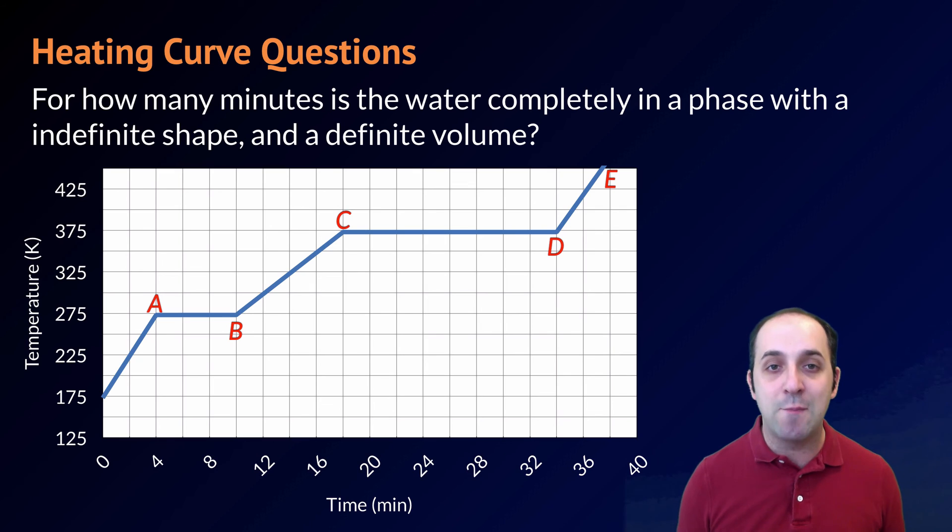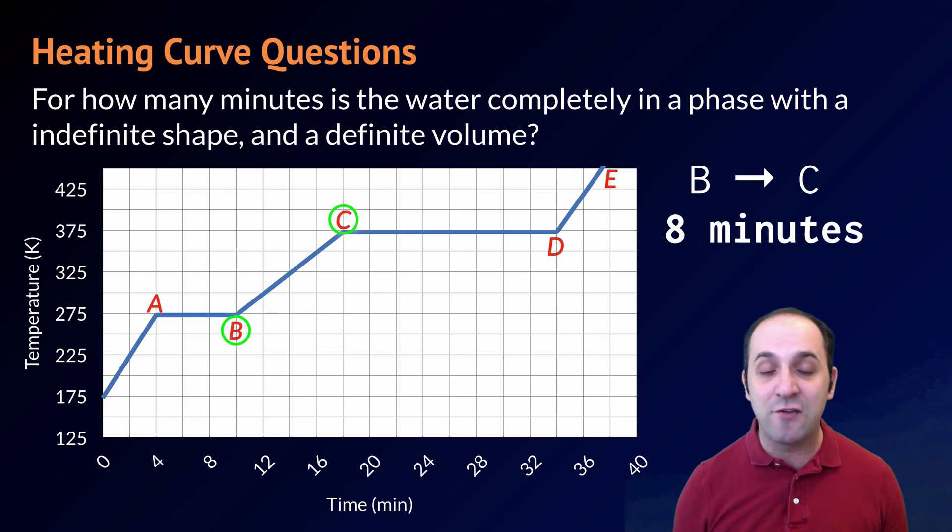A substance with an indefinite shape and a definite volume is going to be a liquid. So we need to know at what point the substance is entirely liquid and where that stops on our heating curve. It starts at interval B, and it ends at interval C. If we look at our times here, interval B is at 10 minutes, and interval C is at 18 minutes. So 18 minus 10 gives us an answer of 8 minutes for the answer to this question.